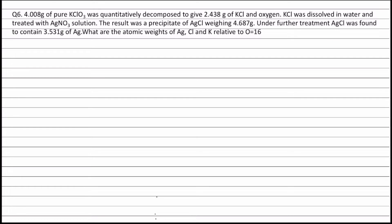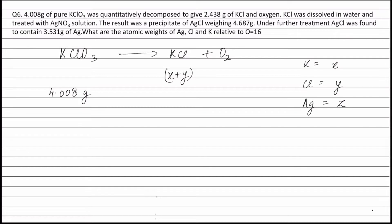The equation for the decomposition of KClO3 to KCl and Oxygen is KClO3 forming KCl plus O2. Let the atomic weight of potassium be X, atomic weight of chlorine be Y, and atomic weight of silver be Z. Molecular weight of KCl can be written as X plus Y grams. The weight of KClO3 taking part in the reaction is 4.008g. Weight of KCl formed is 2.438g. Therefore weight of oxygen formed is 4.008g minus 2.438g, which is equal to 1.57g.